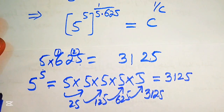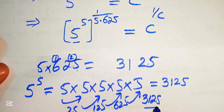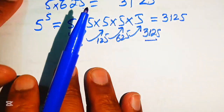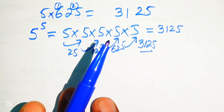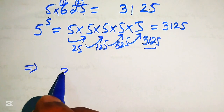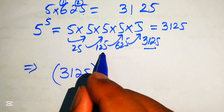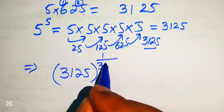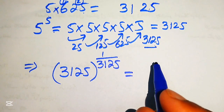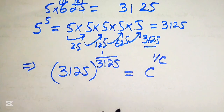We replace both the base 5 to the power of 5 and the exponent denominator 5 times 625 with 3125. Our equation becomes 3125 to the power of 1 over 3125, equals c to the power of 1 over c.